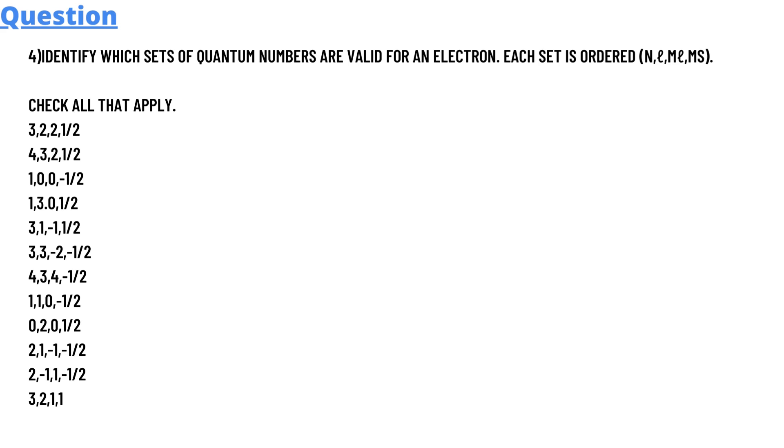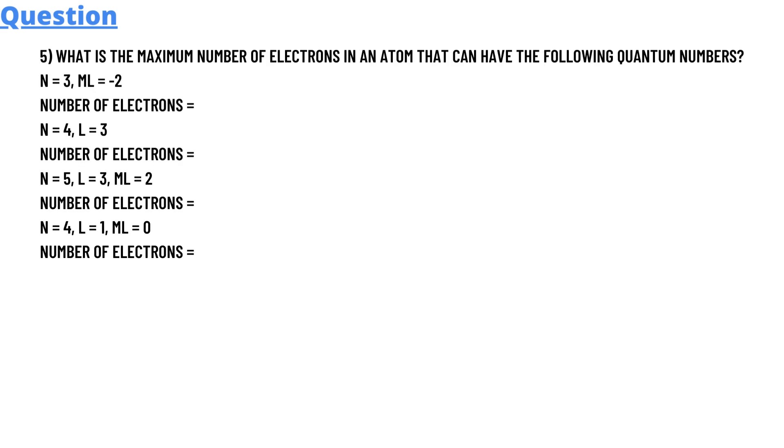Option five: What is the maximum number of electrons in an atom that can have the following quantum numbers? The formula is given below.